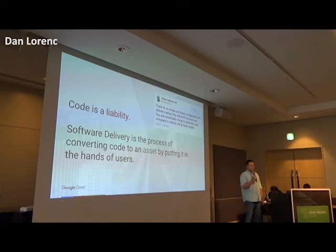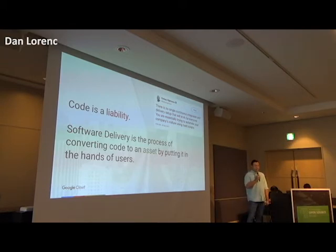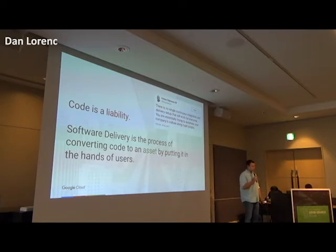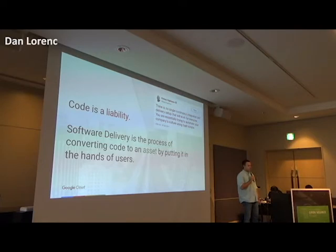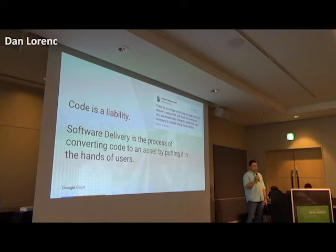As a Kelsey Hightower tweet points out, there's no single continuous integration and delivery setup that works forever. Every company is different. These pipelines basically encapsulate a company's culture — what processes are required, which linting checks and code review techniques are used. So everybody has a different software delivery pipeline because they have different business use cases and different customers.